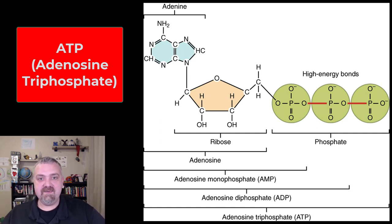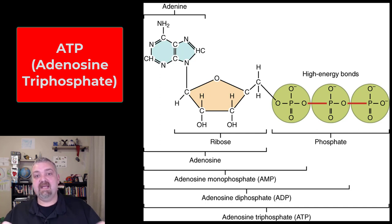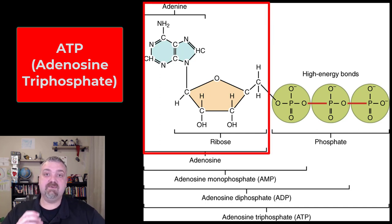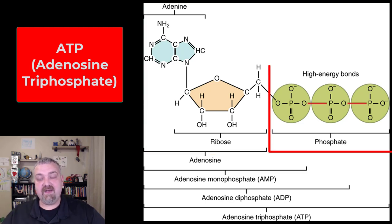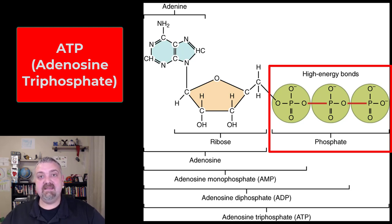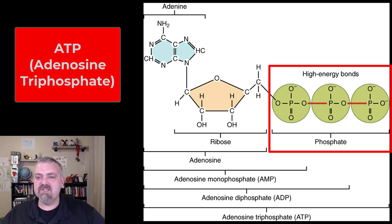Adenosine triphosphate, like the name implies, is actually built from a ribose with an adenine — a nucleotide — that's where the adenosine comes from. And there are three phosphates: adenosine triphosphate. But as you can see here, you can also have adenosine monophosphate and adenosine diphosphate.